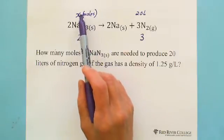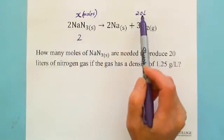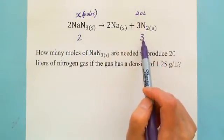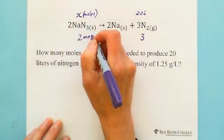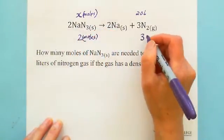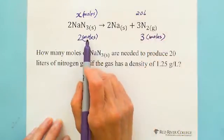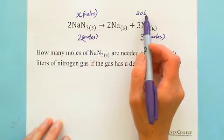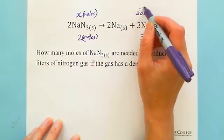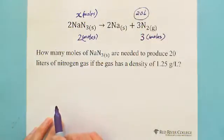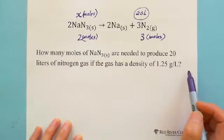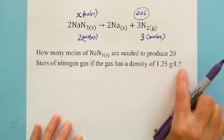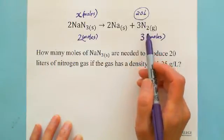You set up the ratio form with X on top and 2 on the bottom, and the given information on the other side. But before setting up this ratio, you need to check if all the units are matched. We check: the coefficient side is moles and moles, but the given value is in liters — not moles. So we need to convert 20 liters to moles. The other information we have is that nitrogen gas has a density of 1.25 grams per liter, which we'll use to convert 20 liters to grams.